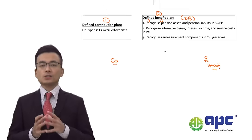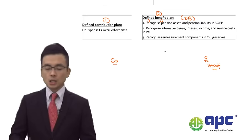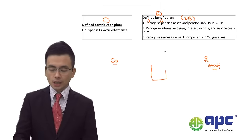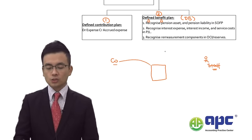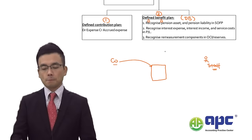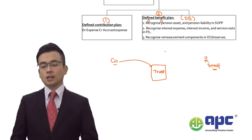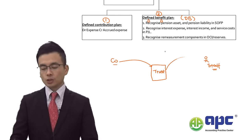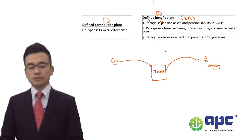In practice, the company would not manage the pension asset portfolio itself but would engage an external trust company, transferring money to it. The trust company invests by buying shares, bonds, and other instruments to grow the asset and hopefully generate sufficient returns to pay staff upon retirement.